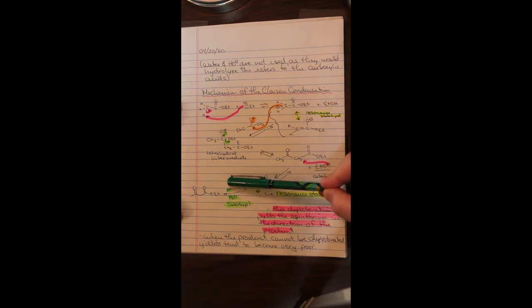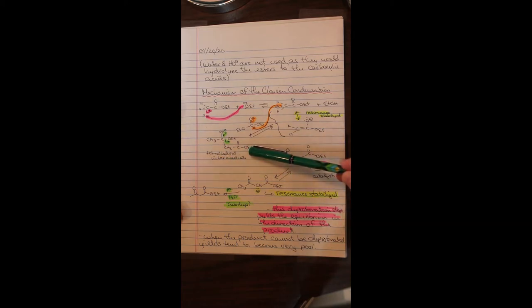This tetrahedral intermediate, when it decomposes, that is the reformation of the carbonyl group, it could lose the enolate, of course, or it could lose ethoxide. In this particular case, the ethoxide is the better leaving group. And what happens is this generates this alpha beta dicarbonyl system. And this reaction now continues.